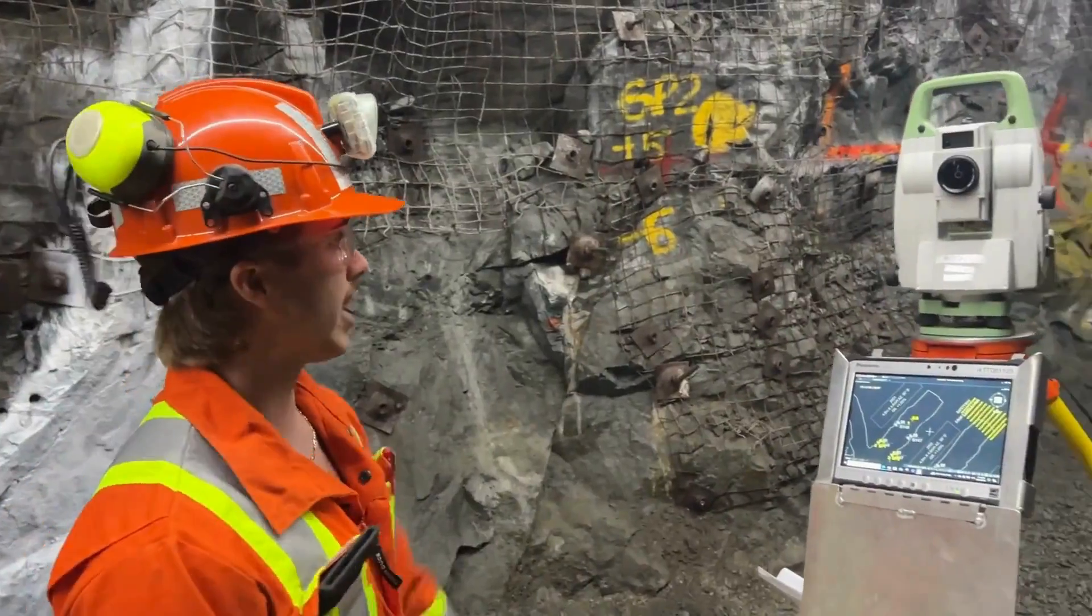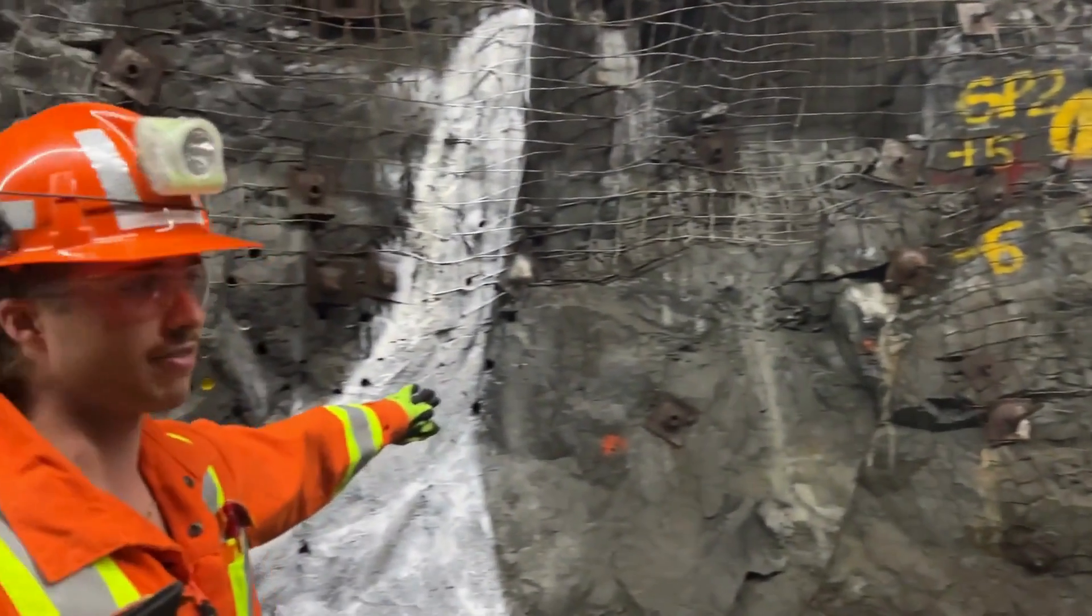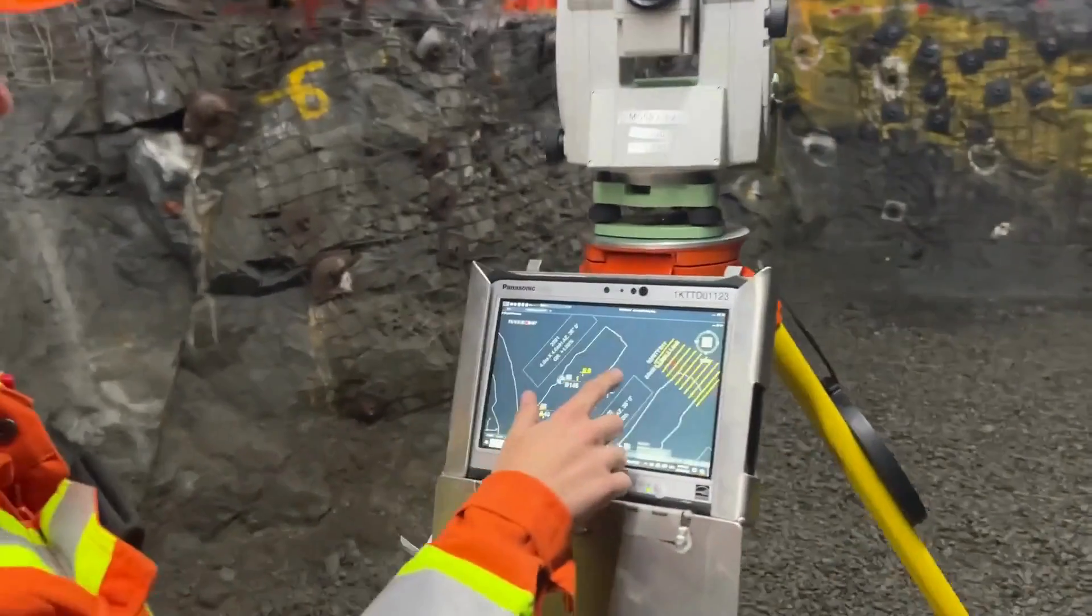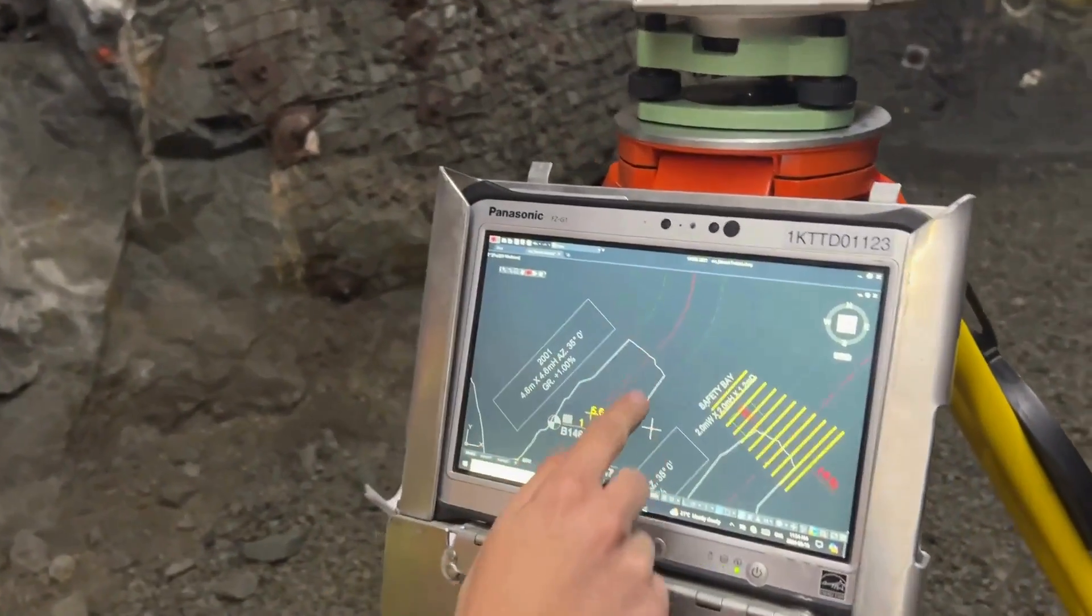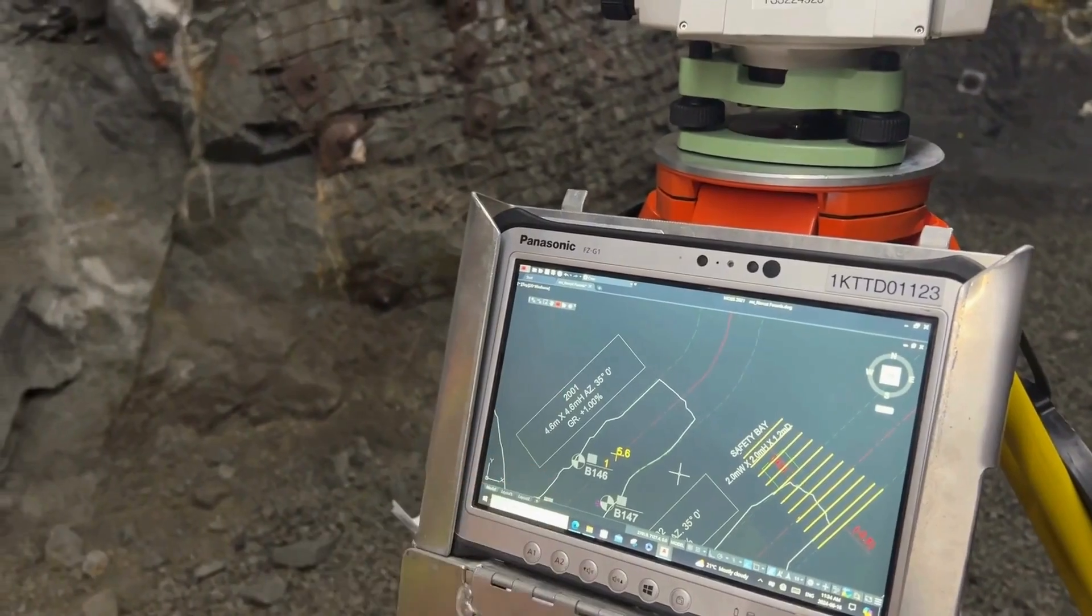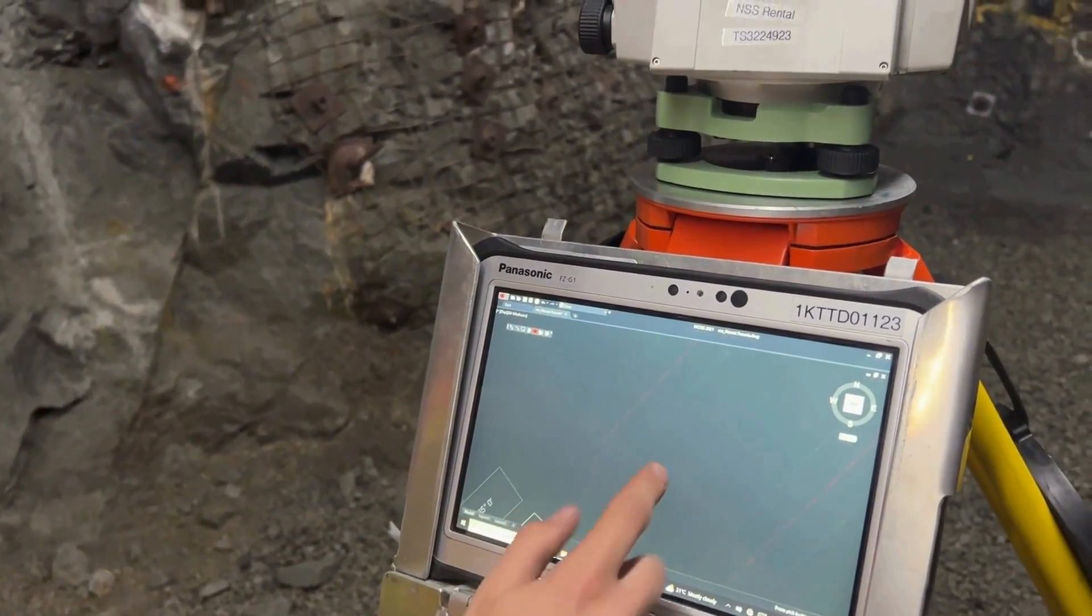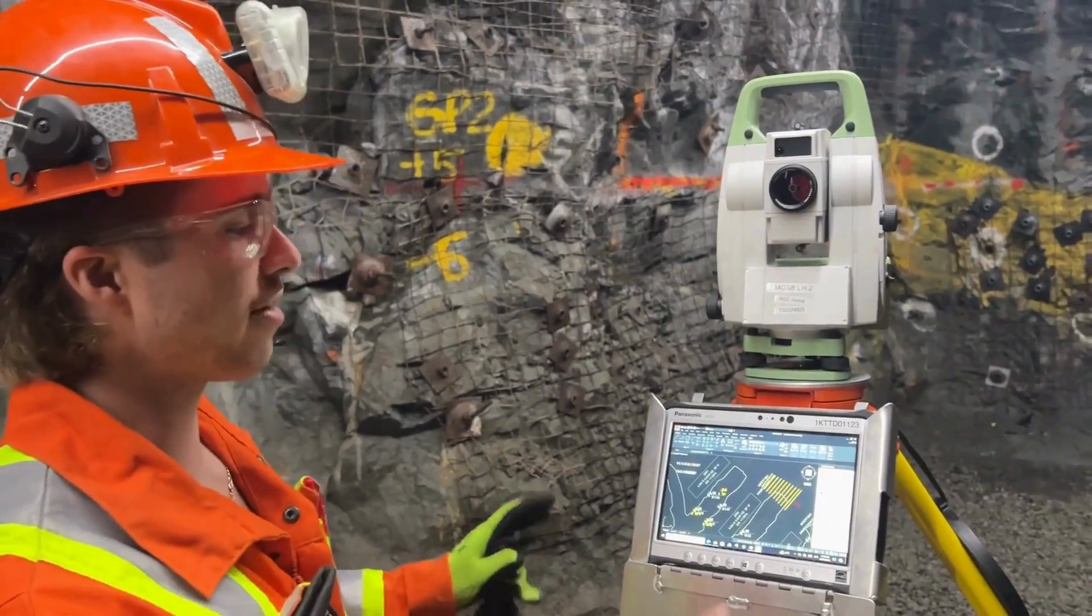As you can see on the face here, we've got a little vein running through it, and to my left here, we've got a fault, and we'll imagine that we have a couple channel samples on the face as well. If you come to the tablet here, you can see the actual mine outline in white. We're in the 2000s drift at these dimensions, and you can see our driving layout that we're following right here.